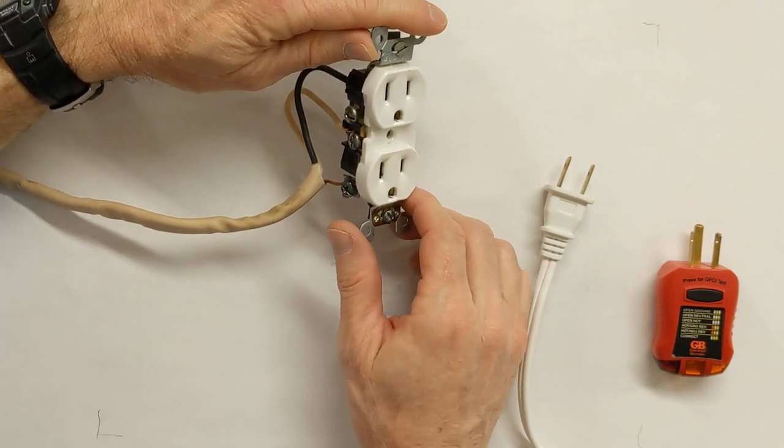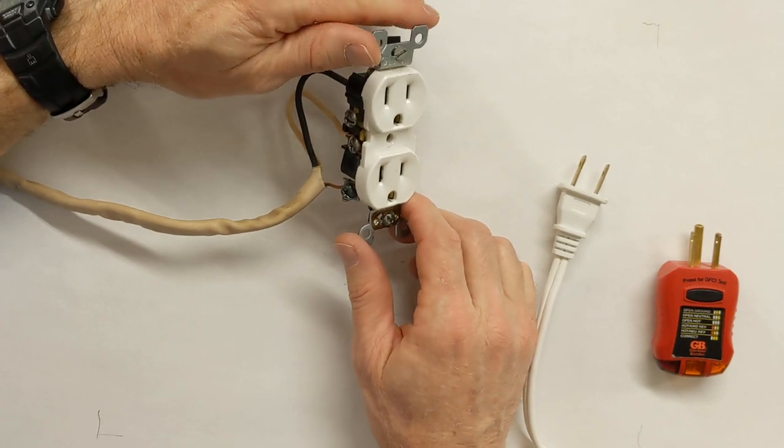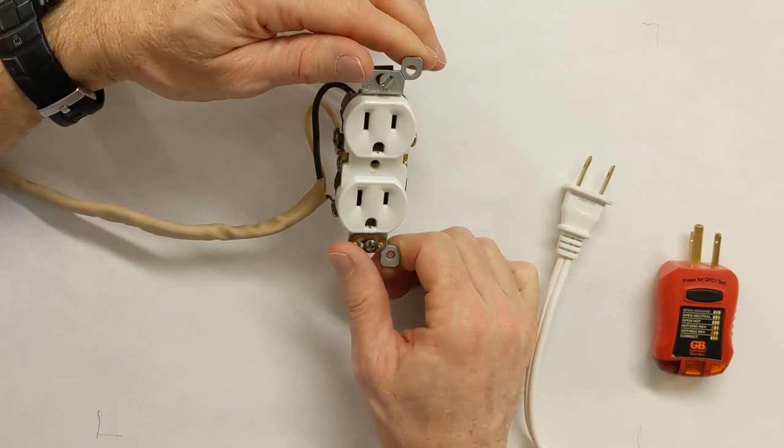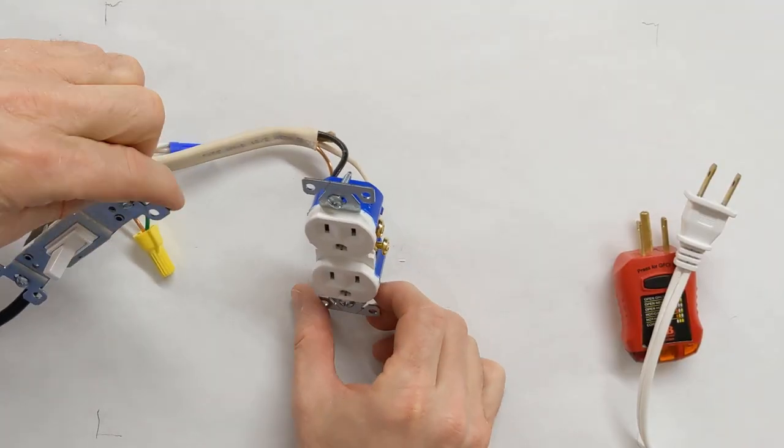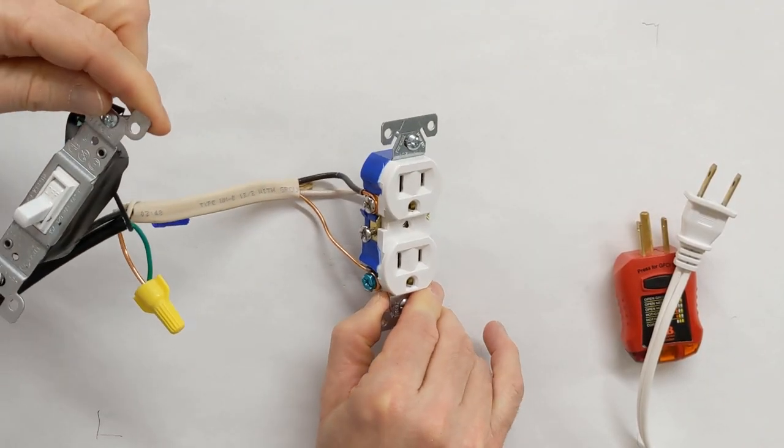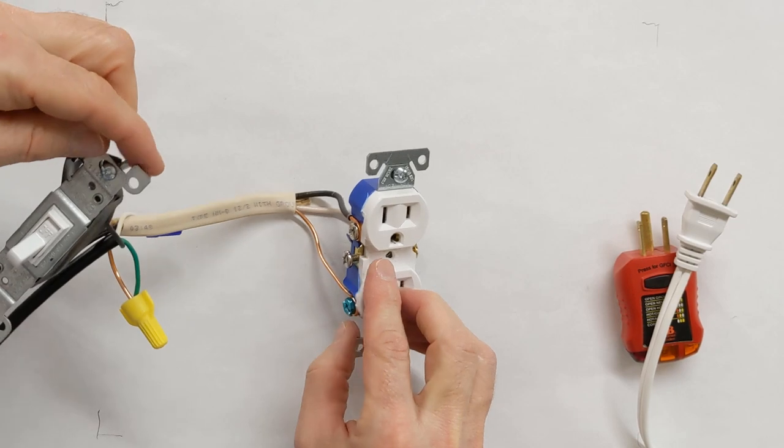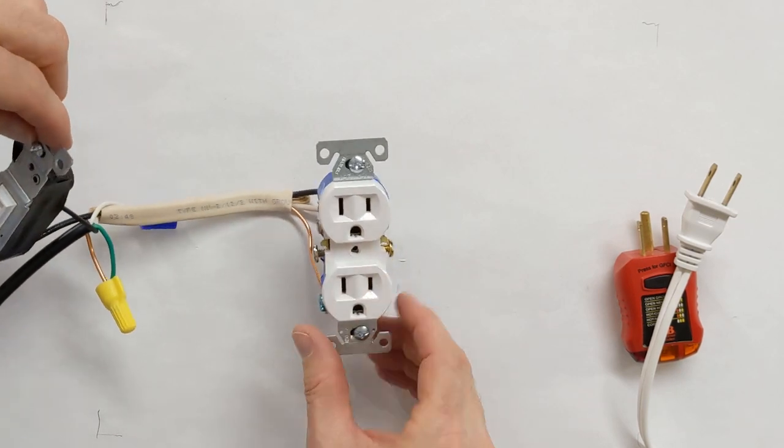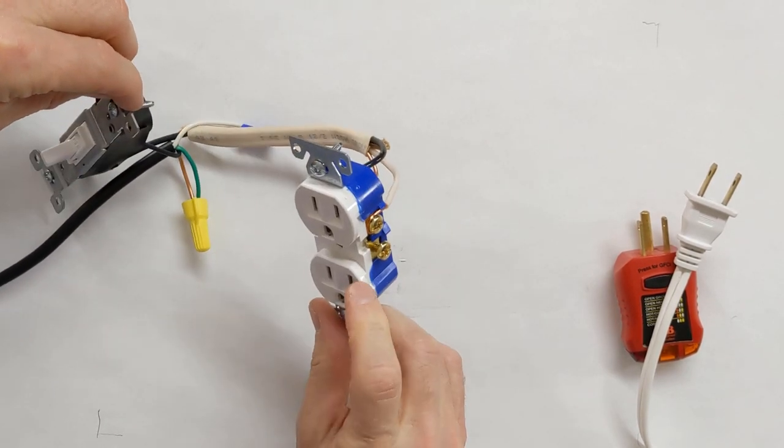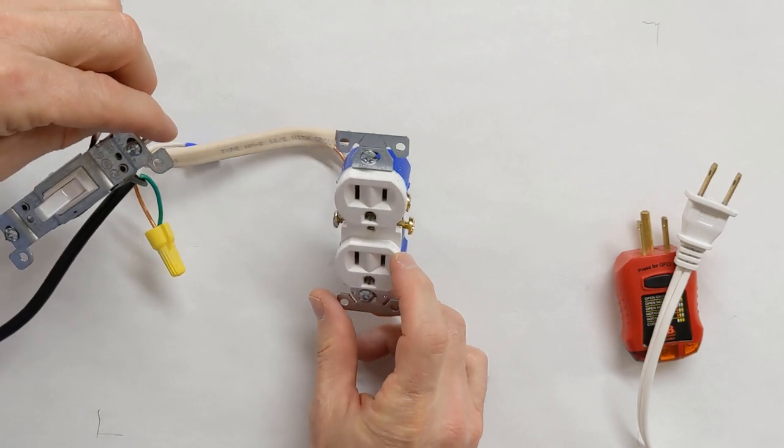If the black and white wires are installed on the wrong sides of the outlet, you get reverse polarity. So this outlet with the black wire on the long slot side and the white wire on the short slot side causes reverse polarity.